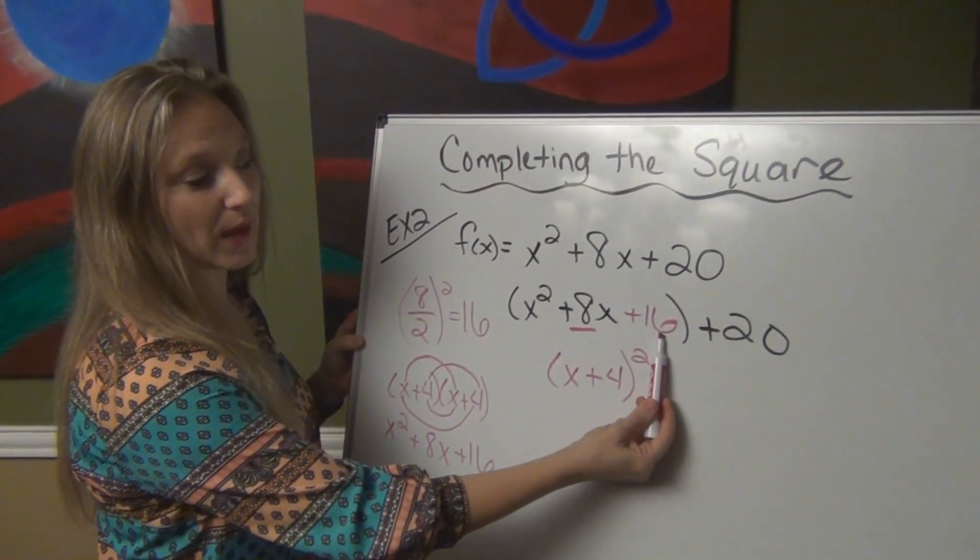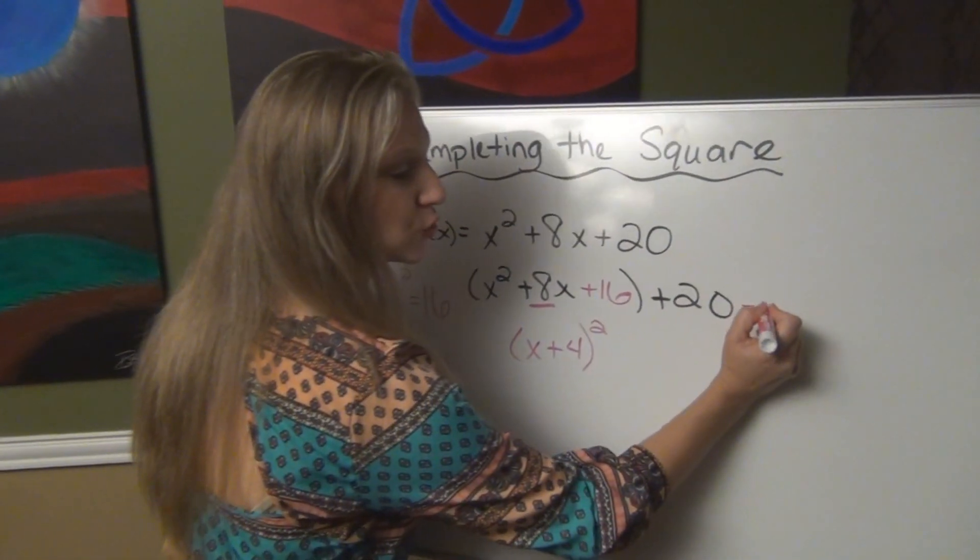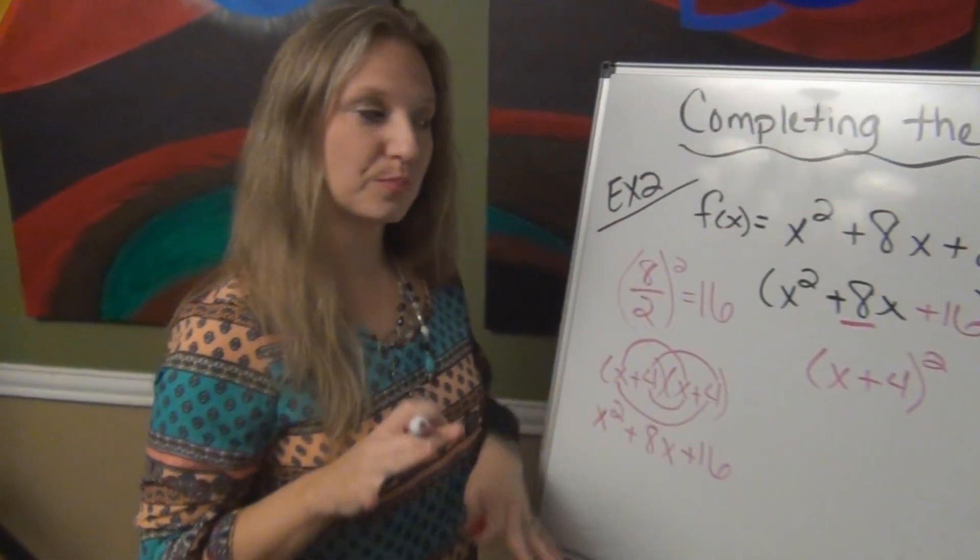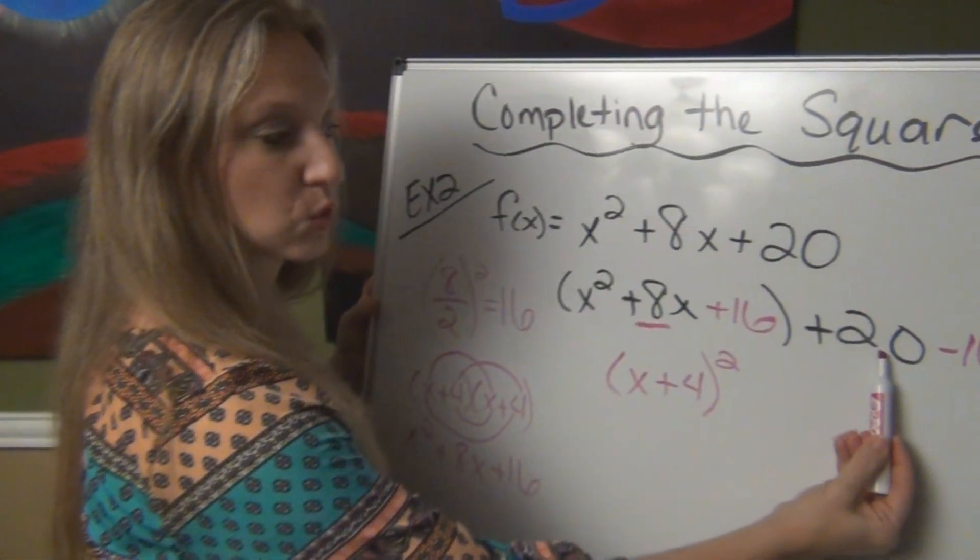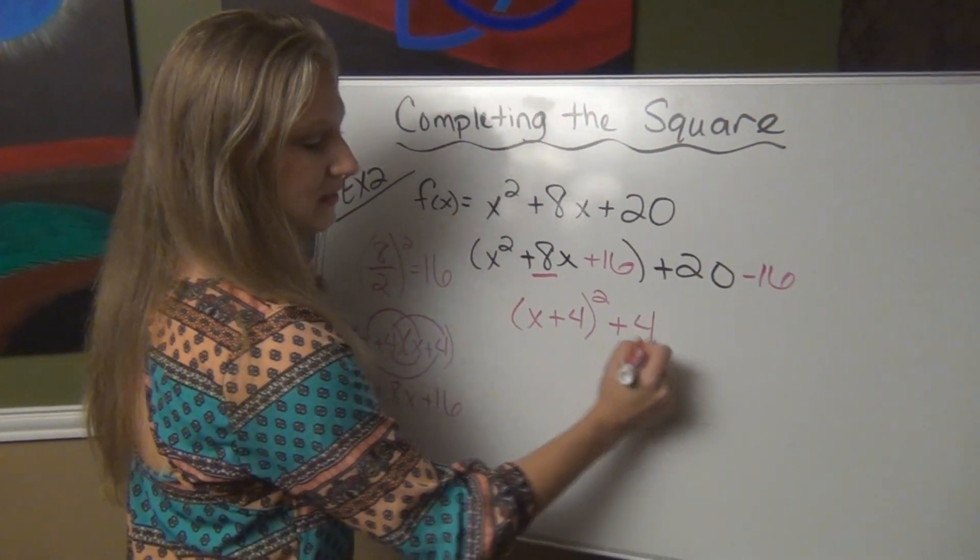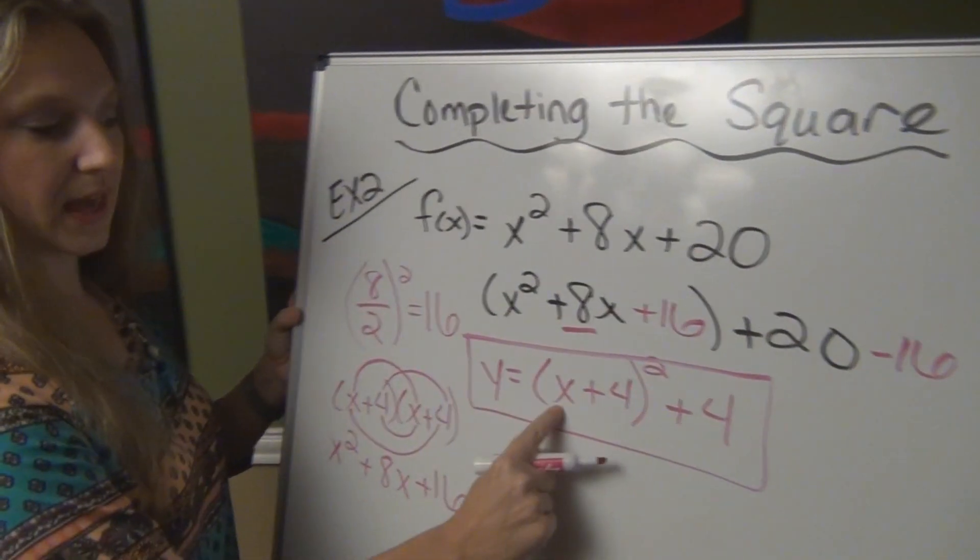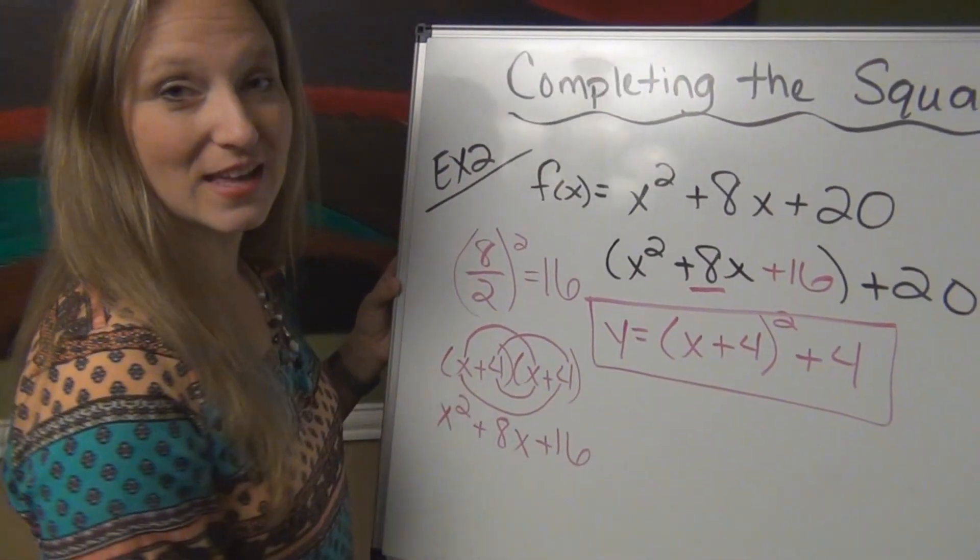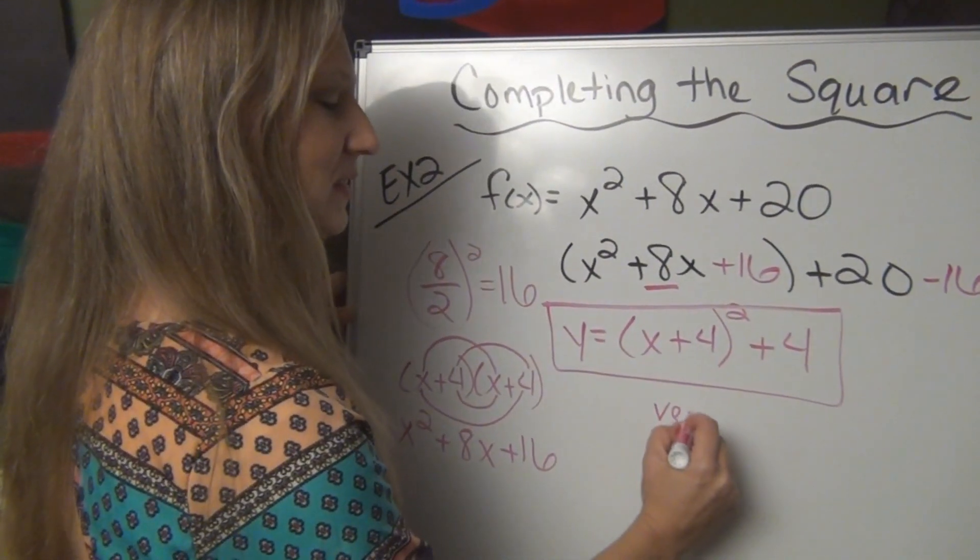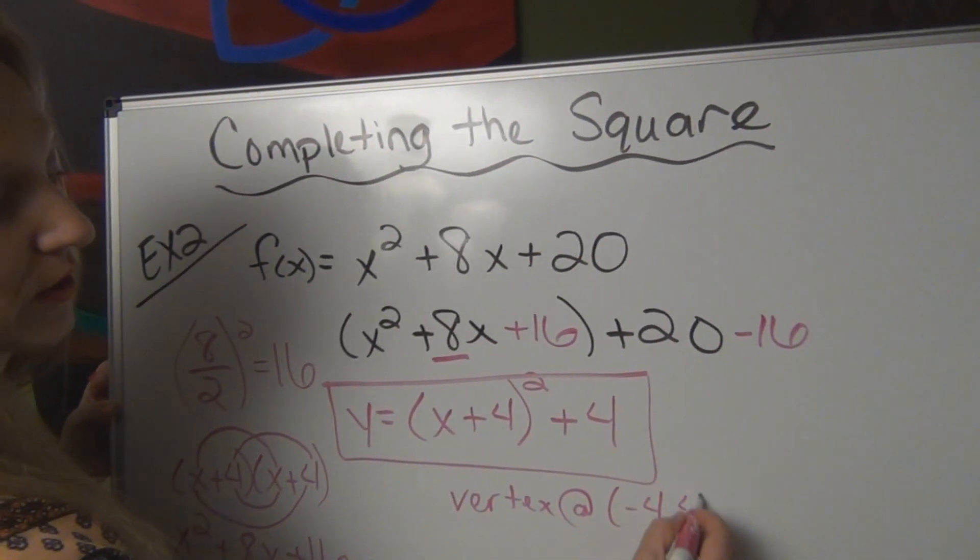Now remember, if we added 16 here to keep our equation balanced, we're going to have to subtract it here so that we keep that equation balanced. So I'm going to subtract 20 minus 16, those combined to be positive 4. My equation is y equals x plus 4 squared plus 4, telling me that my vertex is at negative 4, 4.